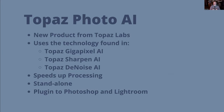Topaz Photo AI is a new project that uses technology from other Topaz tools — Gigapixel AI, Sharpen AI, and Denoise AI. Gigapixel AI's sole purpose is to increase resolution or enlarge images. Sharpen AI uses different models to help sharpen images — if there's lens blur or motion blur, it can save an image that might otherwise not be usable. Denoise AI is their software for removing noise from images when shooting at high ISO in low light.